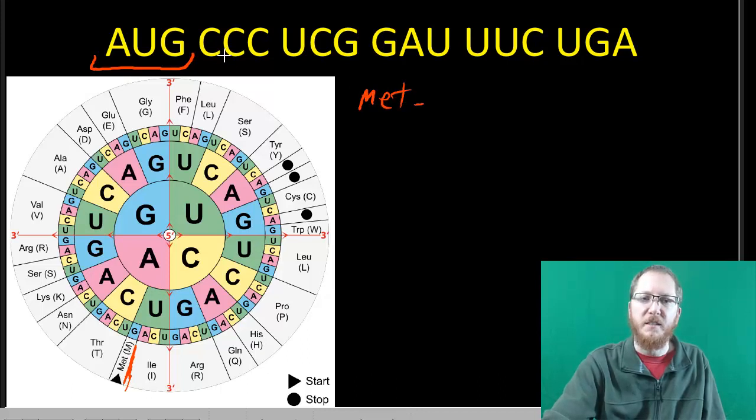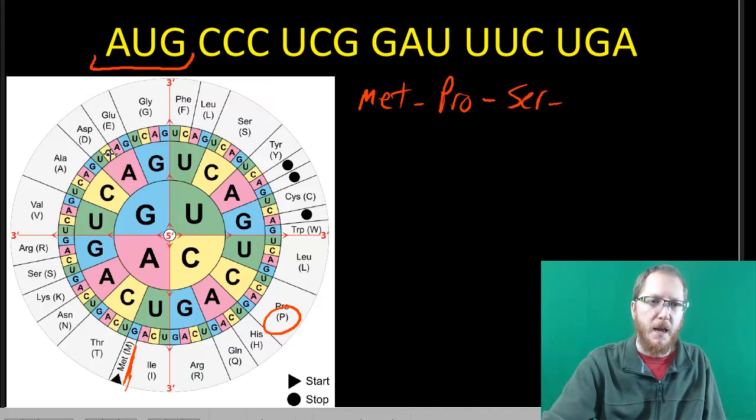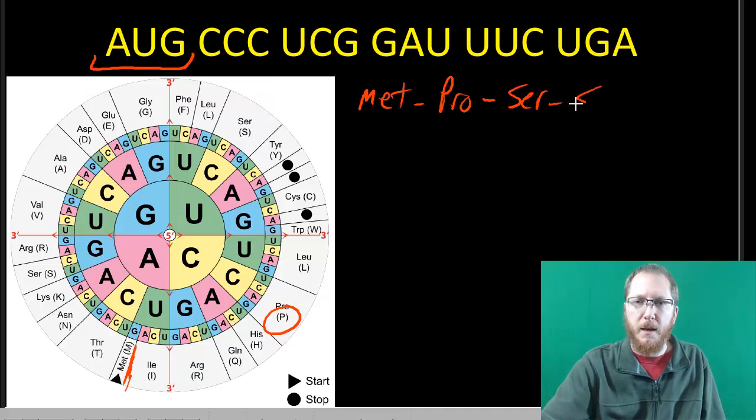This one would be currently coding for met or methionine. Then we have CCC, so I just go C, C, C. That's going to code for proline. So I'll put pro, and then we can do the same thing, U, C, G. That's going to be serine. Then we've got G, A, U. That's, I think it's asparagine or something.